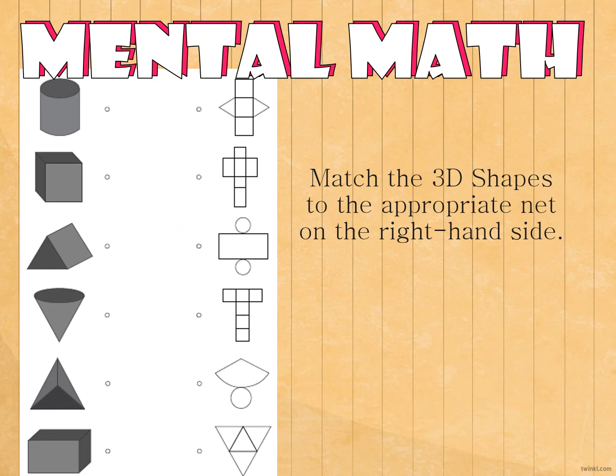For our mental math, we are going to match the 3D shapes to the appropriate net on the right-hand side. In here, it is a cylinder. The net is this one. It is a cube. The net is this one. And this is a triangular prism. The net is this one. And this is a cone. The net is this one, circle and one semicircle. And then we have a triangular pyramid. The net is this one. And we have a rectangular prism or cuboid. The net is this one.